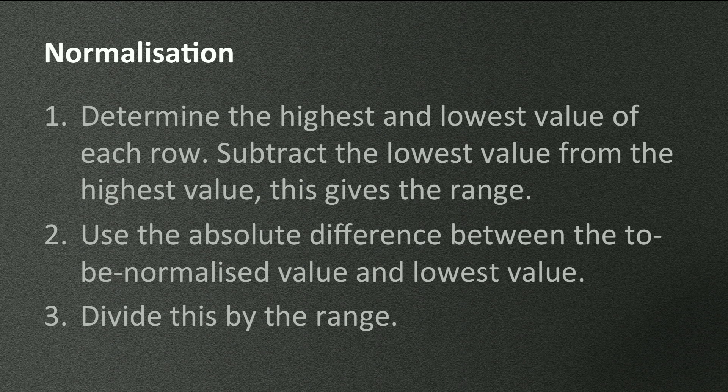Add another row to the table for the weighted sum of the normalized values for each alternative. You get these by multiplying each value with the weight and adding the scores.